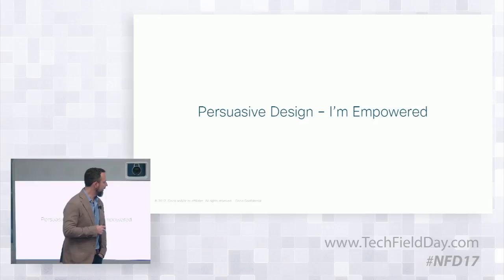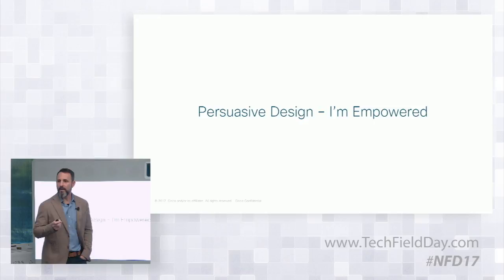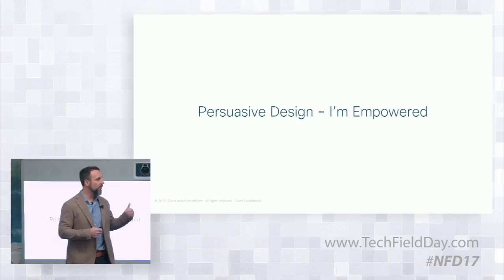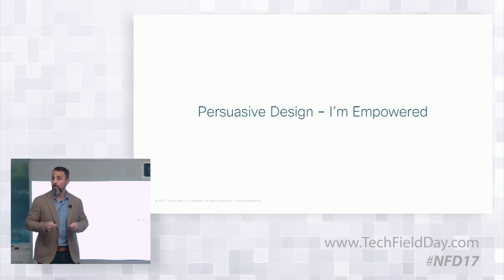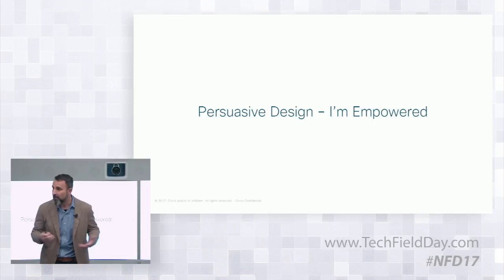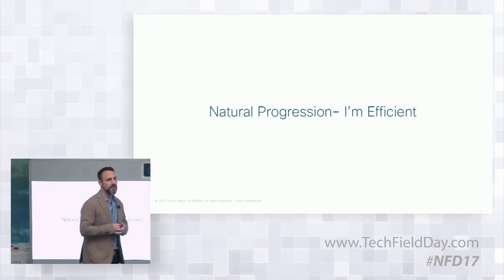The next principle is persuasive design. Trust is earned — if we just met, you don't know me, so how do you trust me? What we're trying to do is create persuasive design to allow users of our tools to feel empowered: giving you ways to test, simulate, learn, and build confidence so that as you execute changes in the network, you know things aren't going to go on fire.